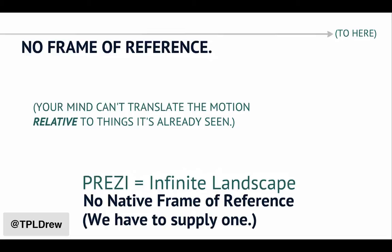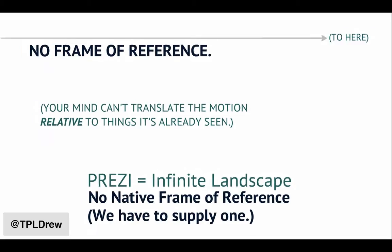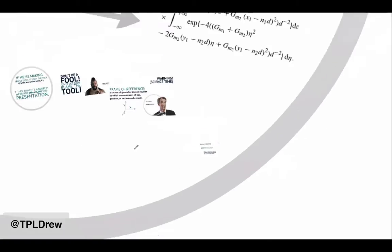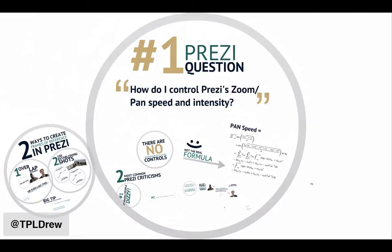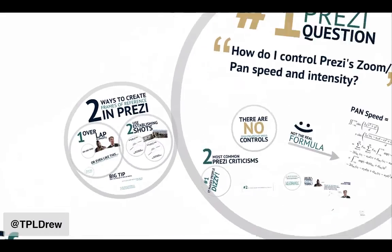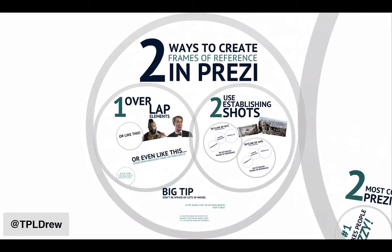You can move very, very fast and not get people dizzy if you're using a frame of reference. So the answer to the question, in short, is that if you want to control Prezi zoom, pan, speed, and intensity, we've actually got to focus on the frame of reference — and that'll stop people from getting dizzy. So let me show you the two ways to actually create frames of reference very simply in your Prezi presentations.